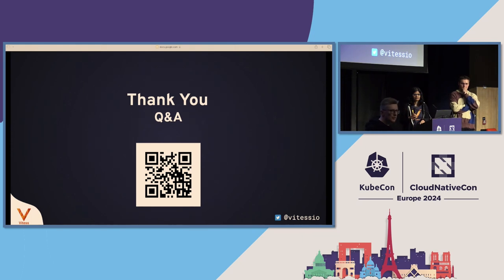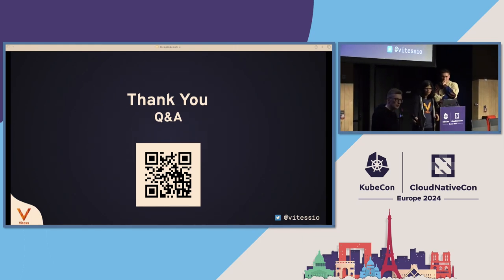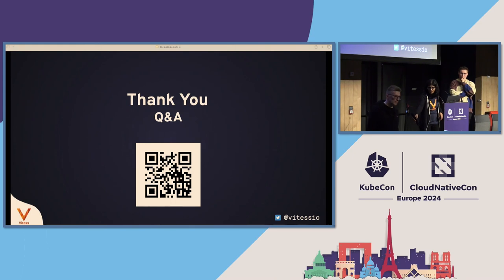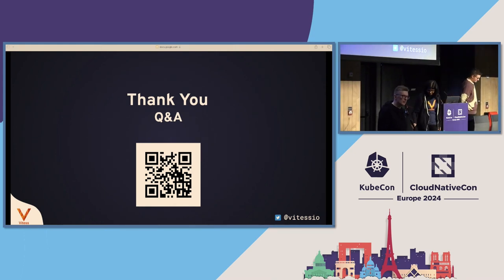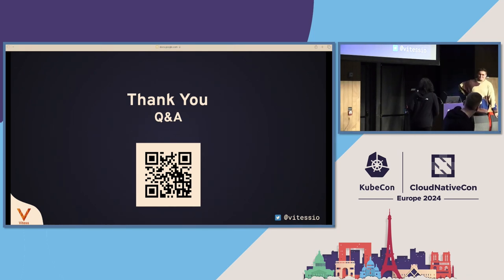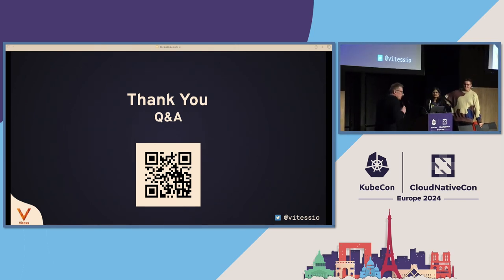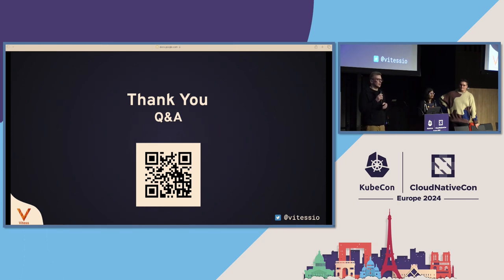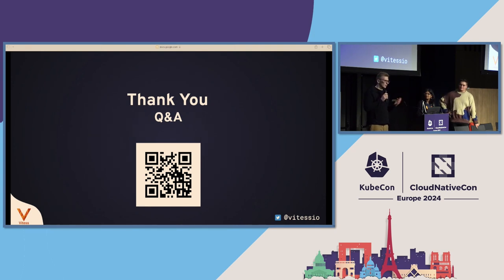Question: In the Vinted presentation, you mentioned eight nodes per shard. Can you explain why eight? Does it mean one primary and seven replicas? Yes — we run one primary and seven replicas, but two replicas are reserved for exporting data to a data warehouse or for on-the-fly queries from developers who need to investigate something. So effectively, six replicas serve production and two extra handle longer workloads.